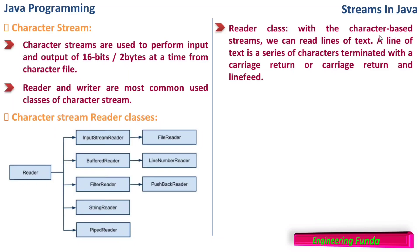With the character-based stream, we can read lines of text. In the Reader class we focus on characters, unlike the bytes in the byte stream classes. A line of text is a series of characters terminated with a carriage return, or carriage return and line feed. Since we are reading character by character, each combination of 16 bits must be understood — if it is less than 16 bits, we need a line feed, and it should end with a carriage return, which indicates the end of the line.